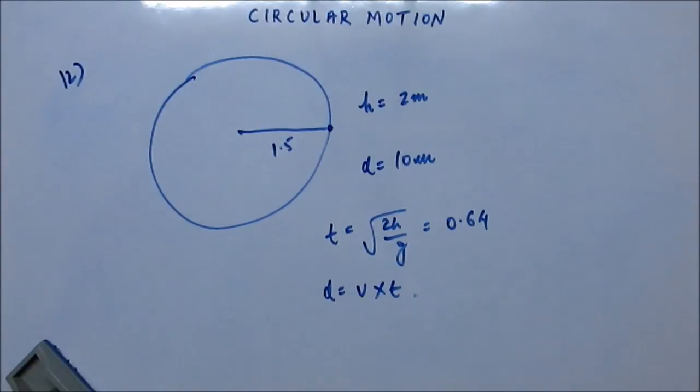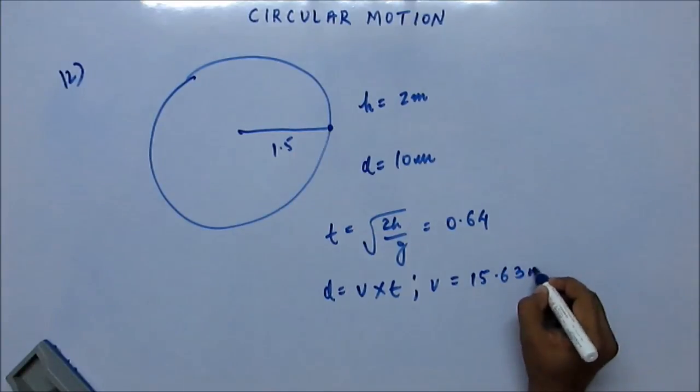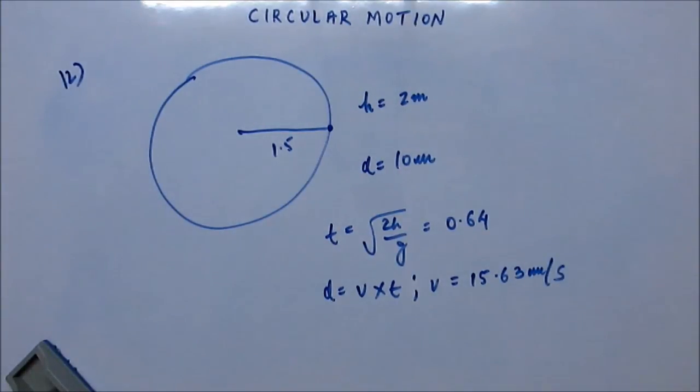The distance is given, time you have calculated, so the tangential velocity which it had can be calculated from here. It will come out as 15.63 meter per second. And finding centripetal acceleration is easy from here. That is V squared upon R. You know V, you have calculated, and R was given. So you can do it. You will get 0.45 meter per second square.